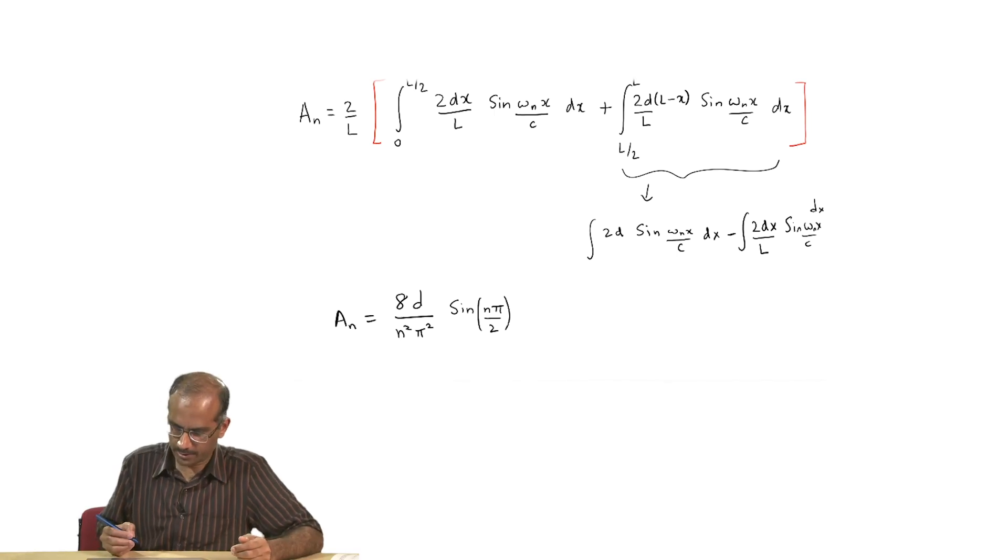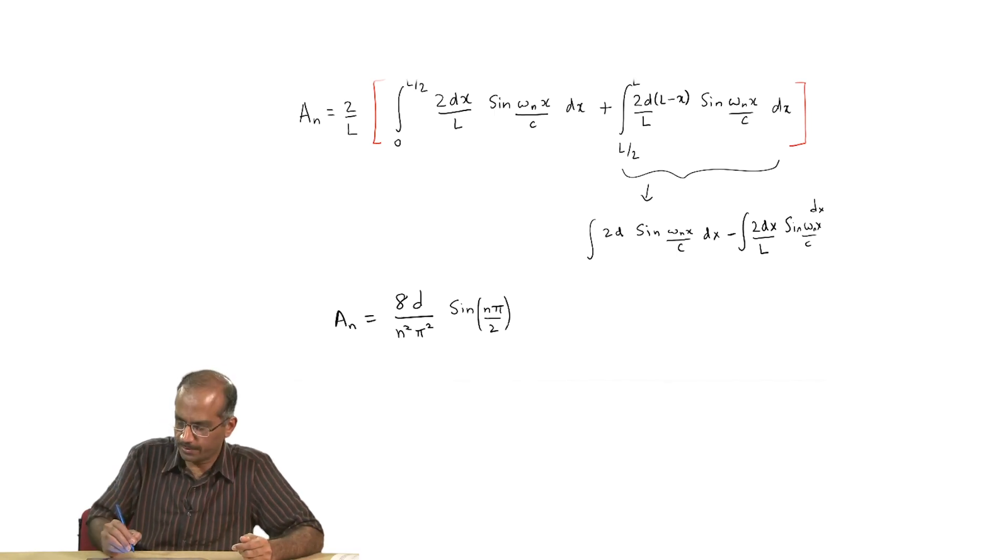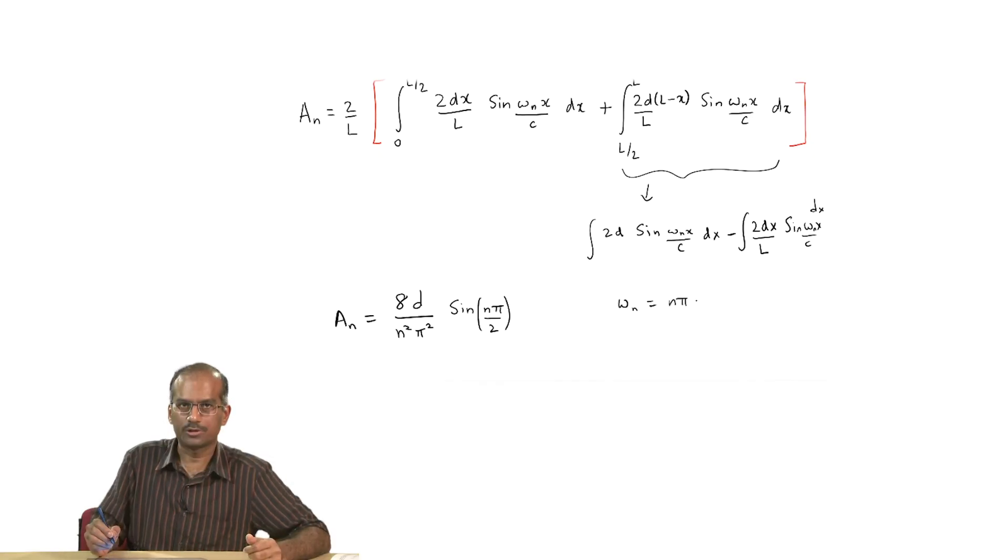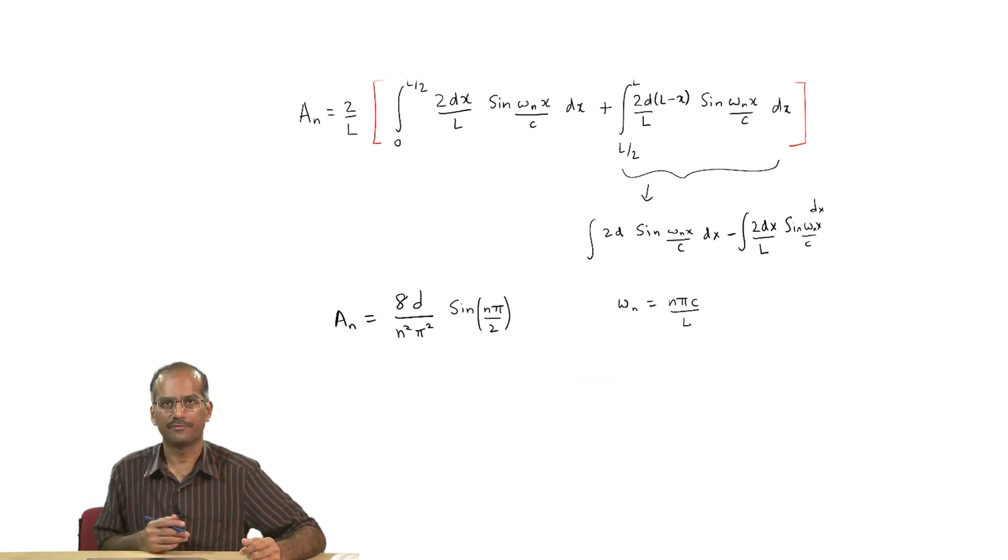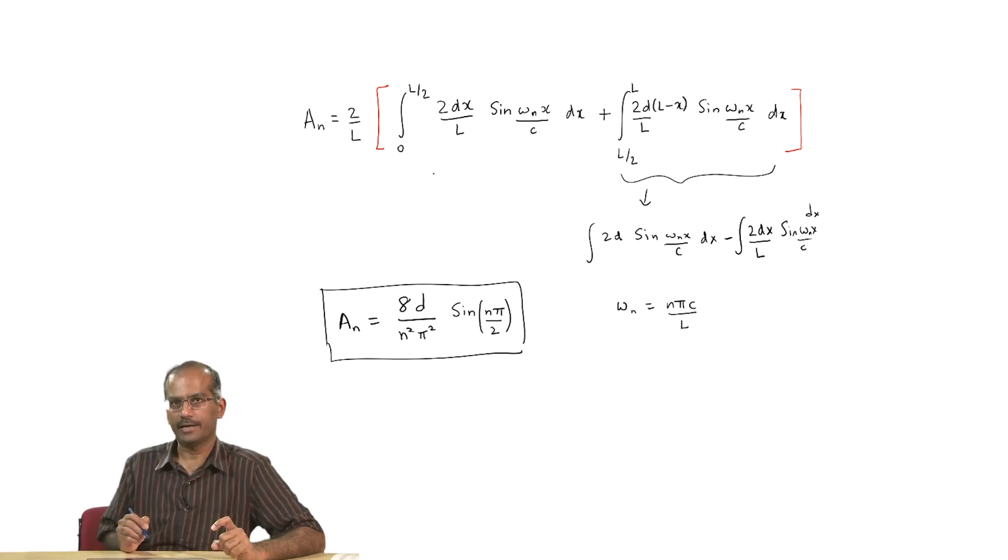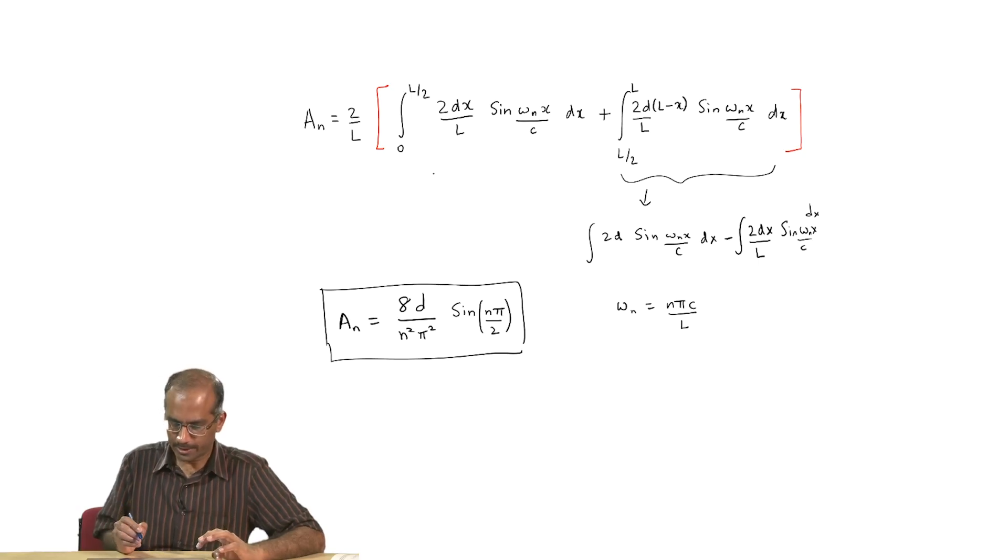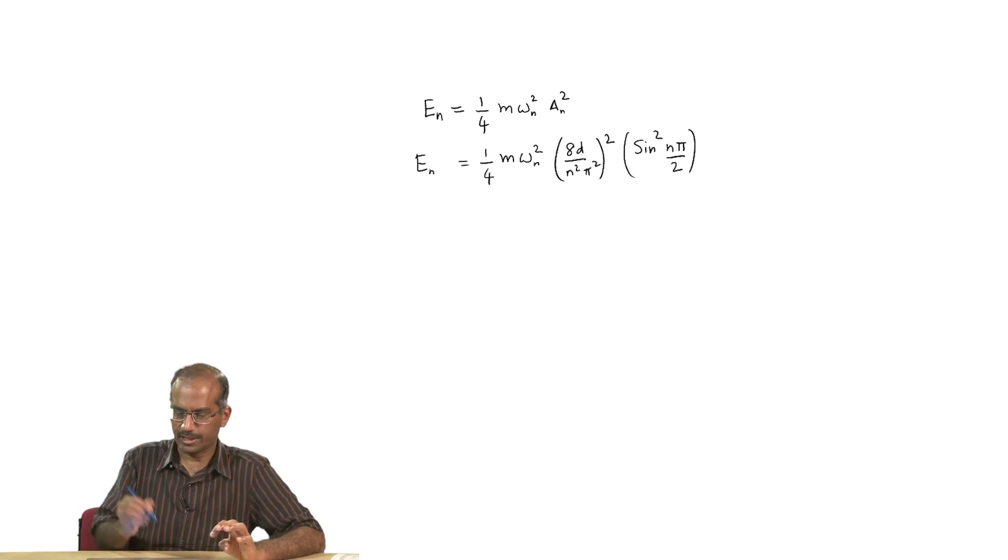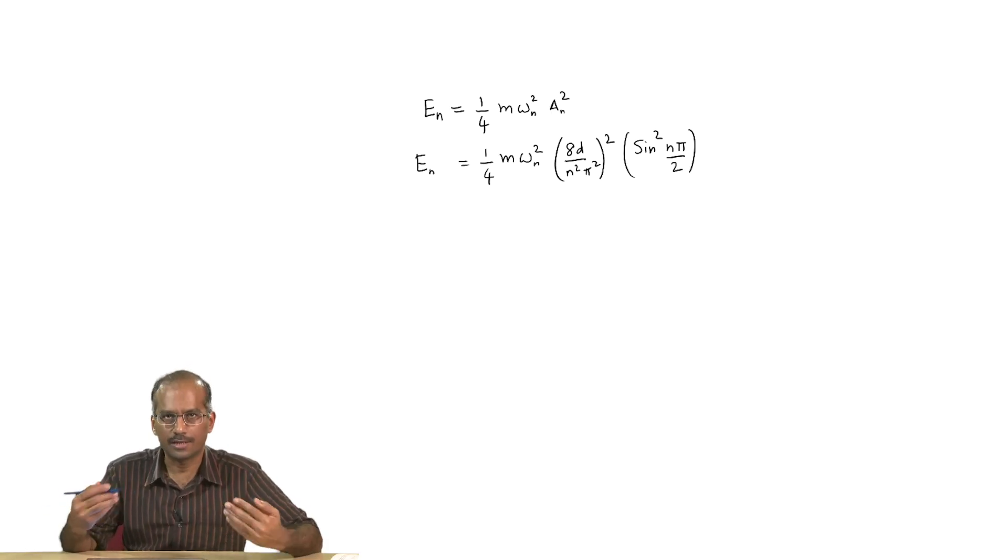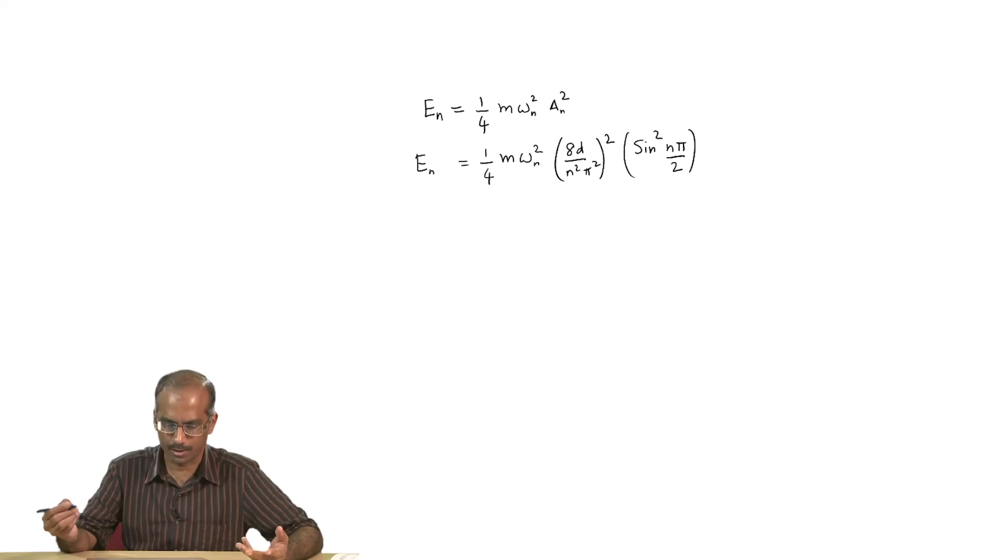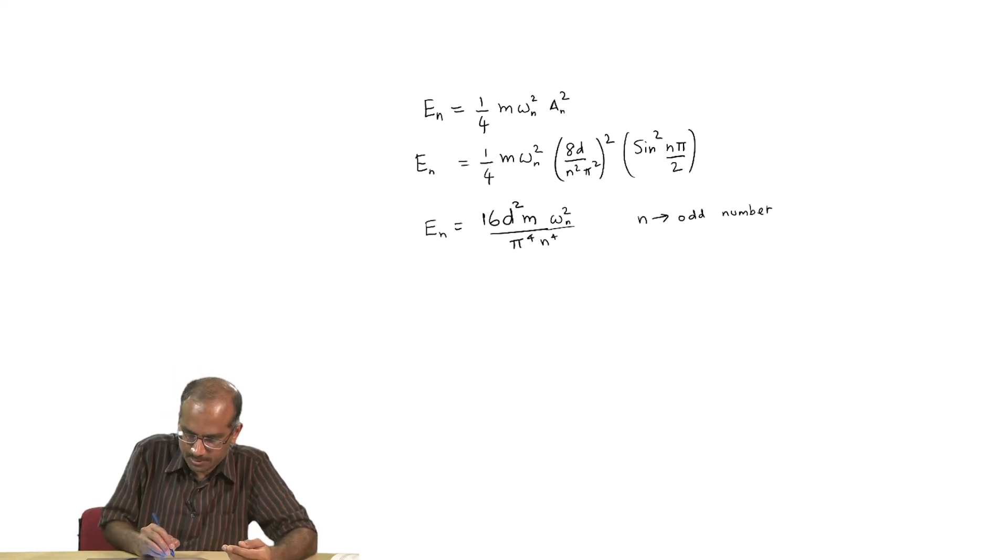This is the expression for a_n, and you should keep in mind that in obtaining this we should substitute for omega_n as n pi c/L, where c is the speed of the wave. If n is even, a_n has to be 0 because in that case the sin(n pi/2) will be 0. Hence, in the expression for energy I can remove this sin squared term and say that n has to be only odd numbers. We are nearly in the last step.